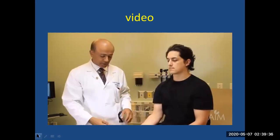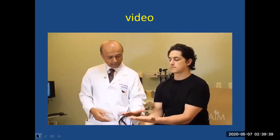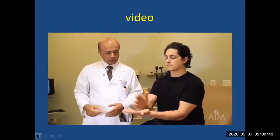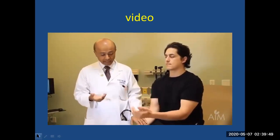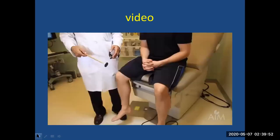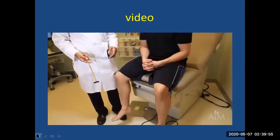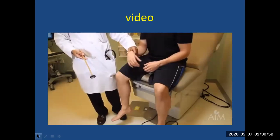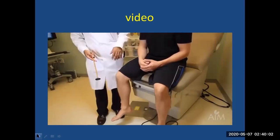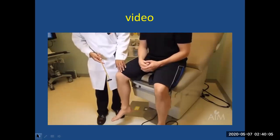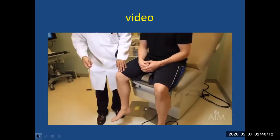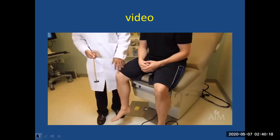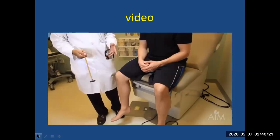Rapid alternating movements are tested by asking the patient to quickly pronate and supinate one hand on the other. If abnormal, this is called dysdiadochokinesia. Next, pendular knee jerks are assessed — patients with cerebellar disease may have hypotonia, and one manifestation is that after the knee reflex is elicited, the leg will keep swinging three, four, or five times, indicating hypotonia.